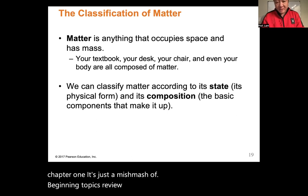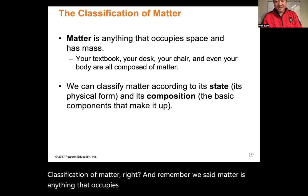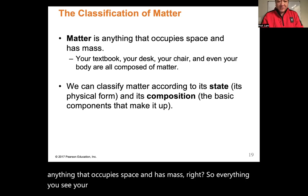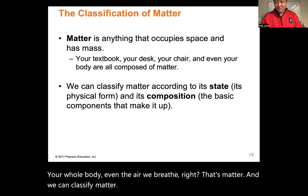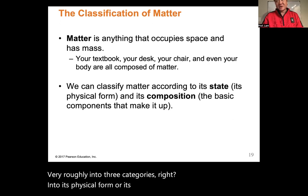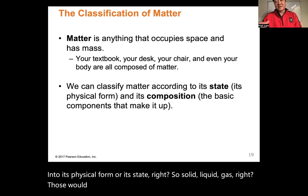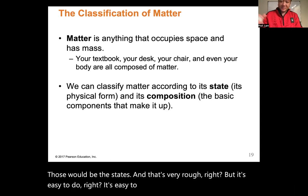Next is the classification of matter. Remember, matter is anything that occupies space and has mass — everything you see: your desk, your chair, your whole body, even the air we breathe. We can classify matter roughly into three categories based on its physical form or state: solid, liquid, or gas. Those are the states of matter, and it's easy to identify which one something is.